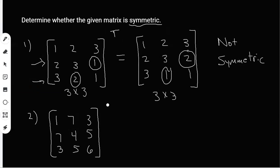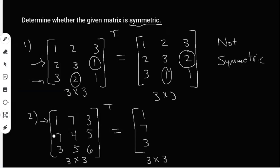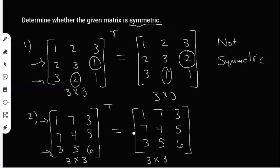Moving on to example two, I'm going to take the transpose of this matrix. This is also a three by three, so its transpose should be a three by three square matrix. The first row is 1, 7, 3 — that becomes the first column: 1, 7, 3. The second row is 7, 4, 5 — that becomes the second column: 7, 4, 5. The third row is 3, 5, 6 — that becomes the third column: 3, 5, 6. These two matrices are the same, so the transpose equals the original matrix. Therefore, this matrix is symmetric.